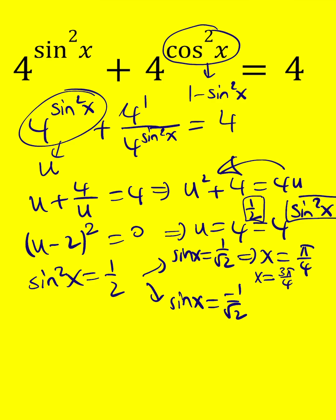And then we're going to have the other x values, which are pi plus pi over 4, which is 5 pi over 4, and then 2 pi minus pi over 4, which is 7 pi over 4.